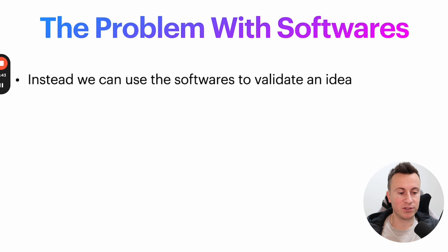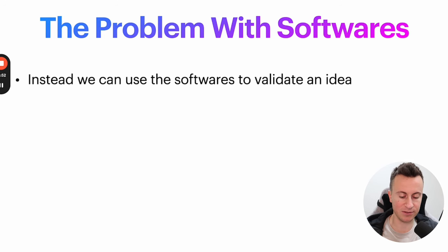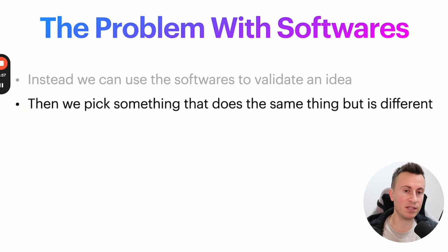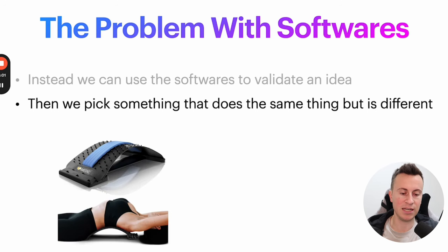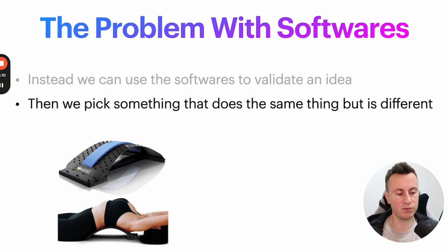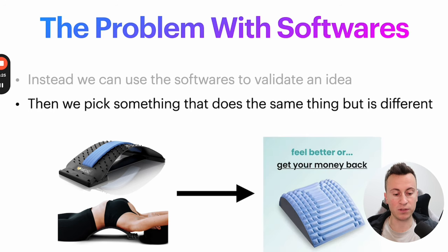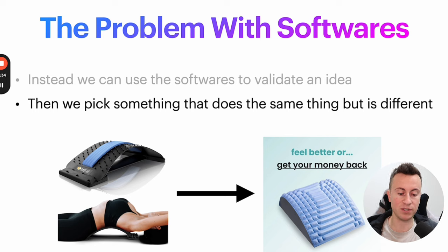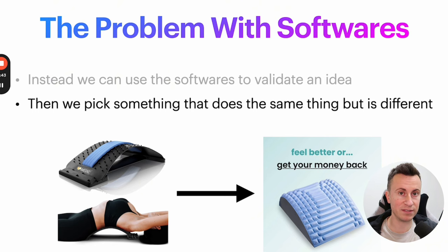So what do we do instead? I'm not saying product research softwares are useless — you can still use them, but use them to validate an idea rather than copy directly. Use them to confirm there's a proof of concept, then find something that does the exact same thing but is different and unique, something nobody has seen before. For example, around 2018-19 backstretchers went mega viral and made people six or seven figures. Then AceMend sold the exact same concept but with a different design and materials — a proven market with proven demand, but a product nobody had seen before. Attention equals sales.